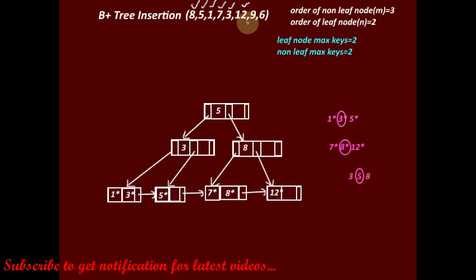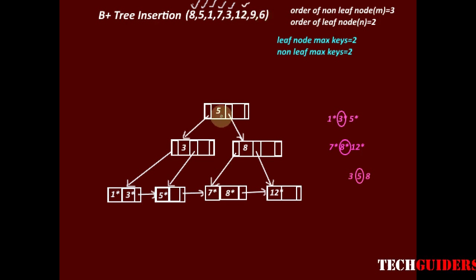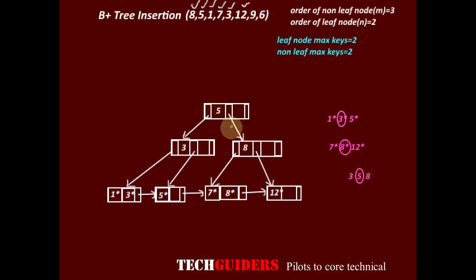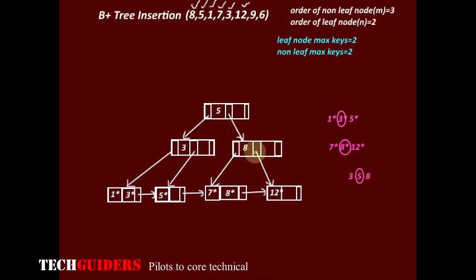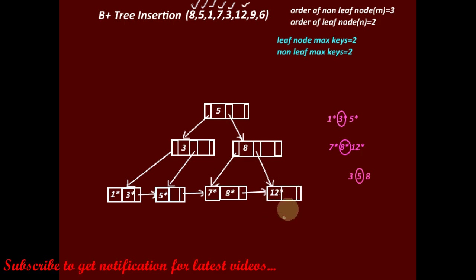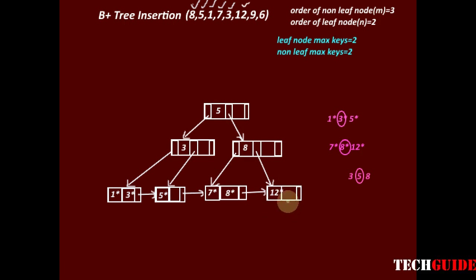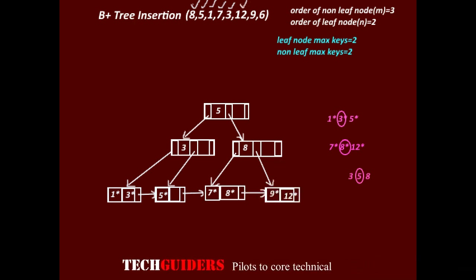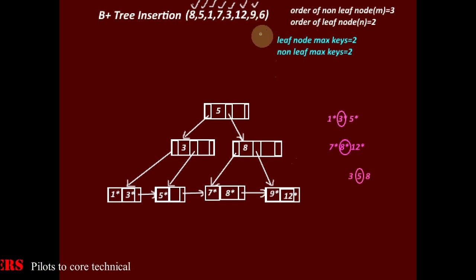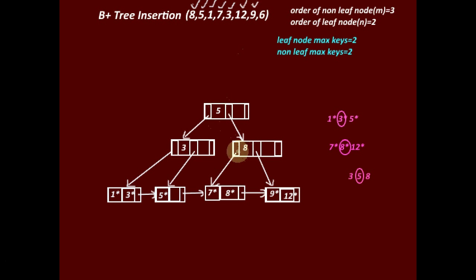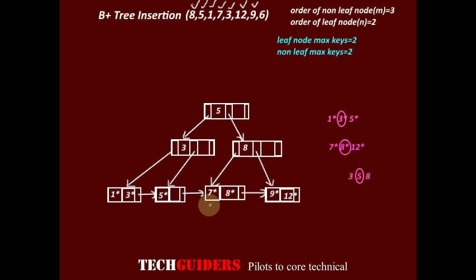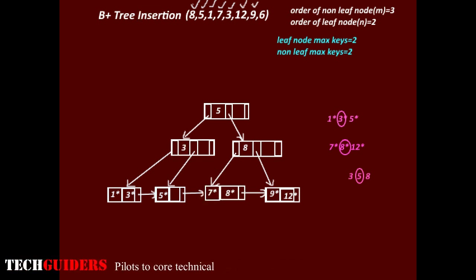Key 12 is now inserted. Next, to insert 9, start from the root: 9 is greater than 5, then 9 is greater than 8, so we reach the rightmost leaf node. There is space in this leaf node, so we insert 9 along with its data record pointer before 12.